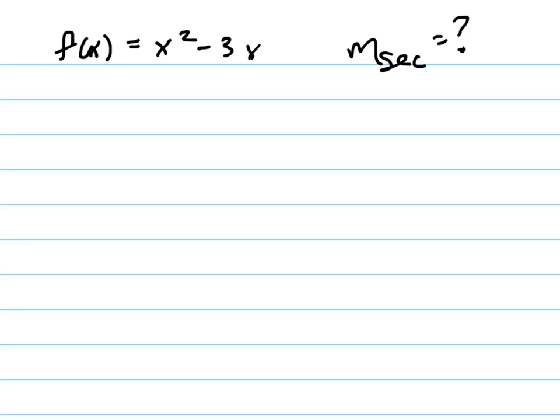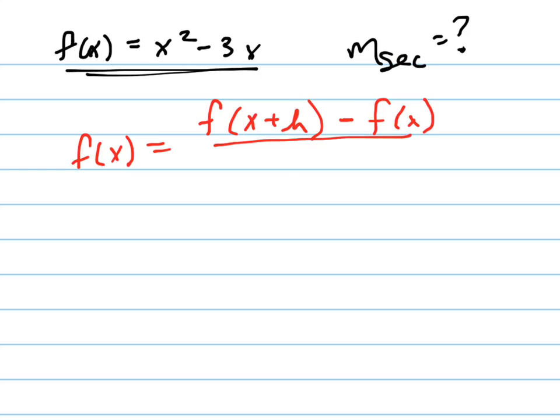They want us to find the slope of the secant line given that f of x equals this. So the formula that you should know by now, I'll do this in red here, is f of x equals f of x plus h for some h minus f of x all divided by h.